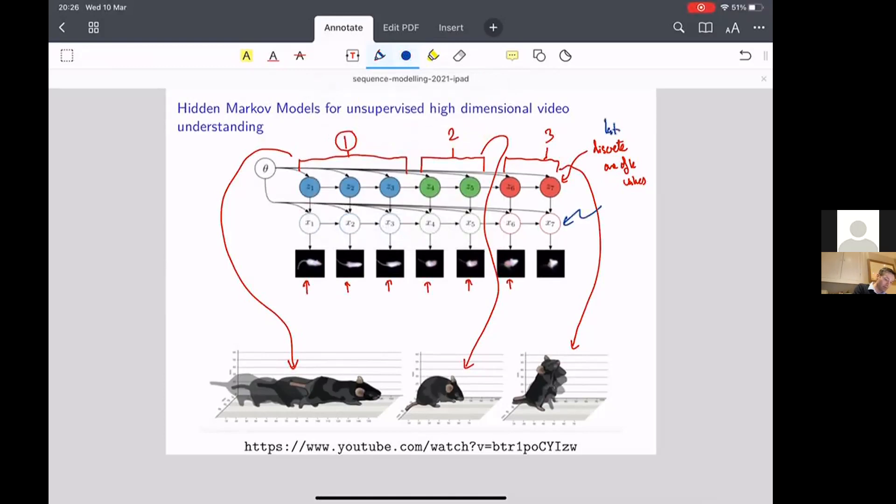And they're going to be continuous variables. So the variables at the top here, the zeds, are the discrete things. They encode things more like actions, like a discrete state HMM.